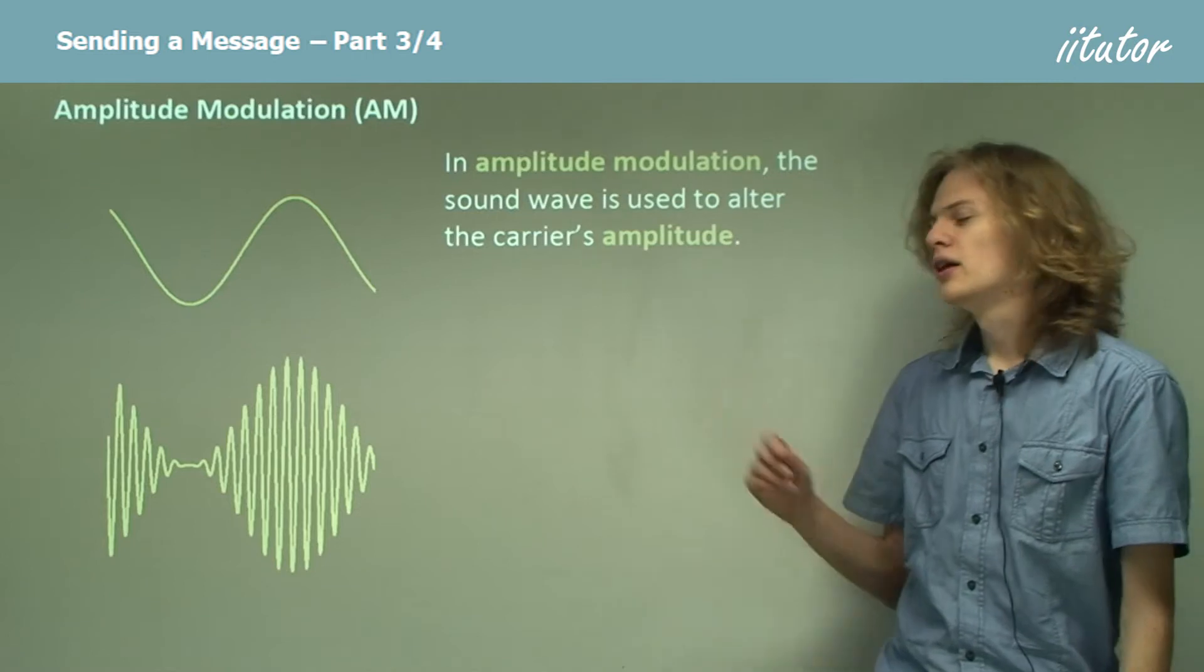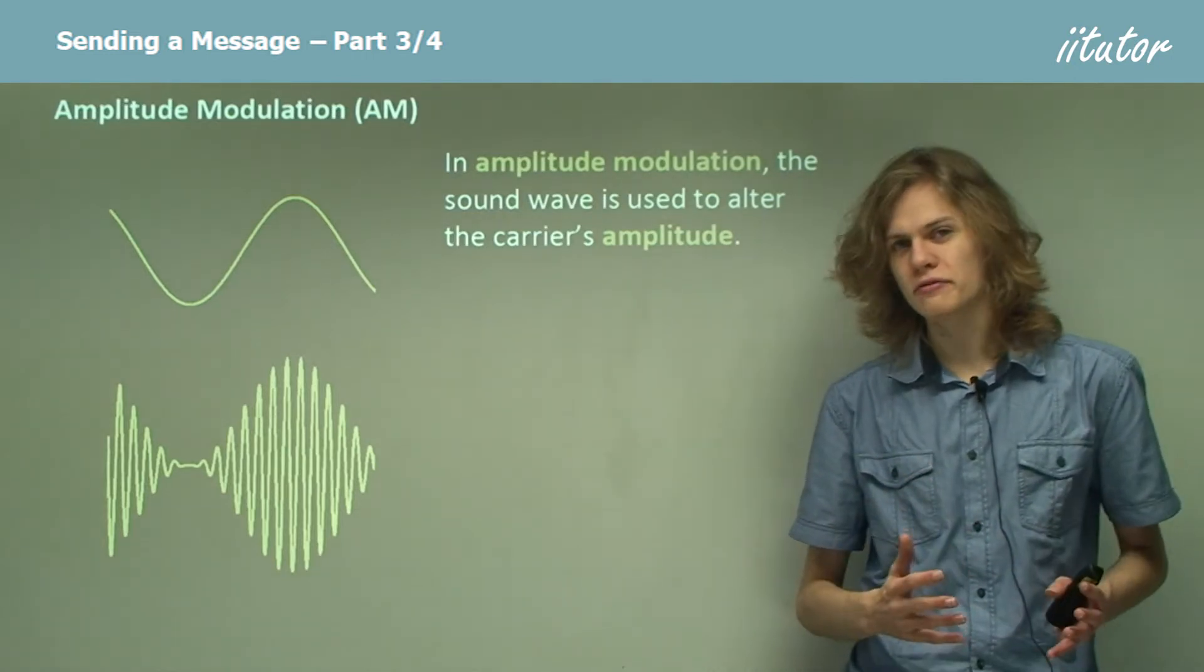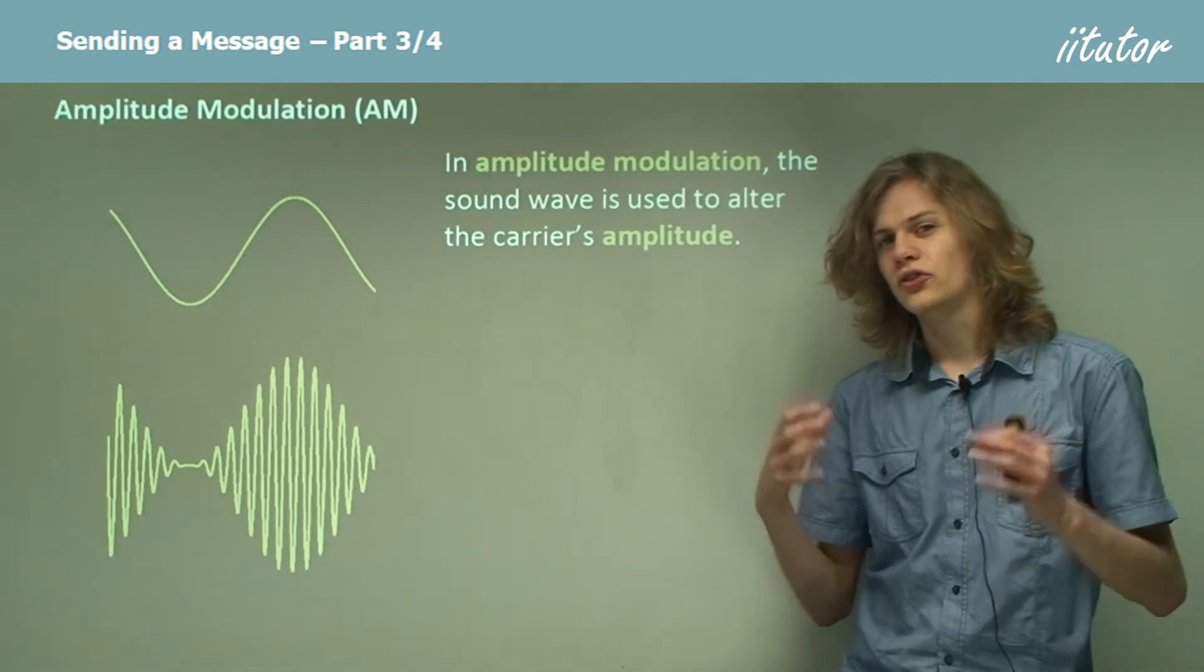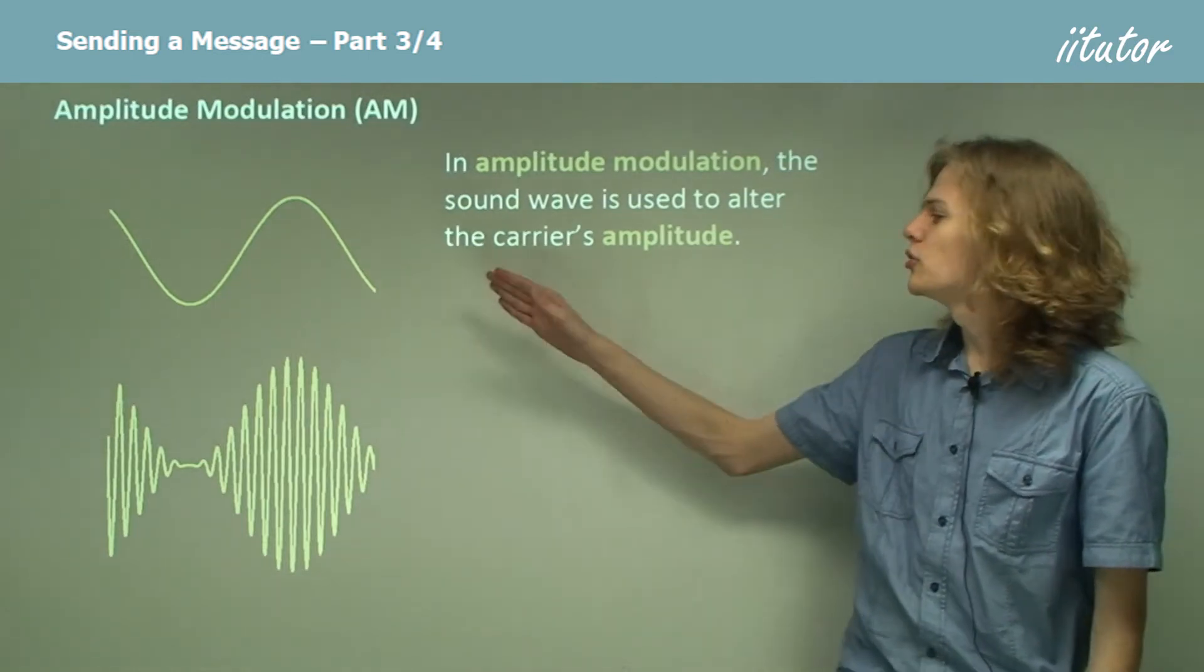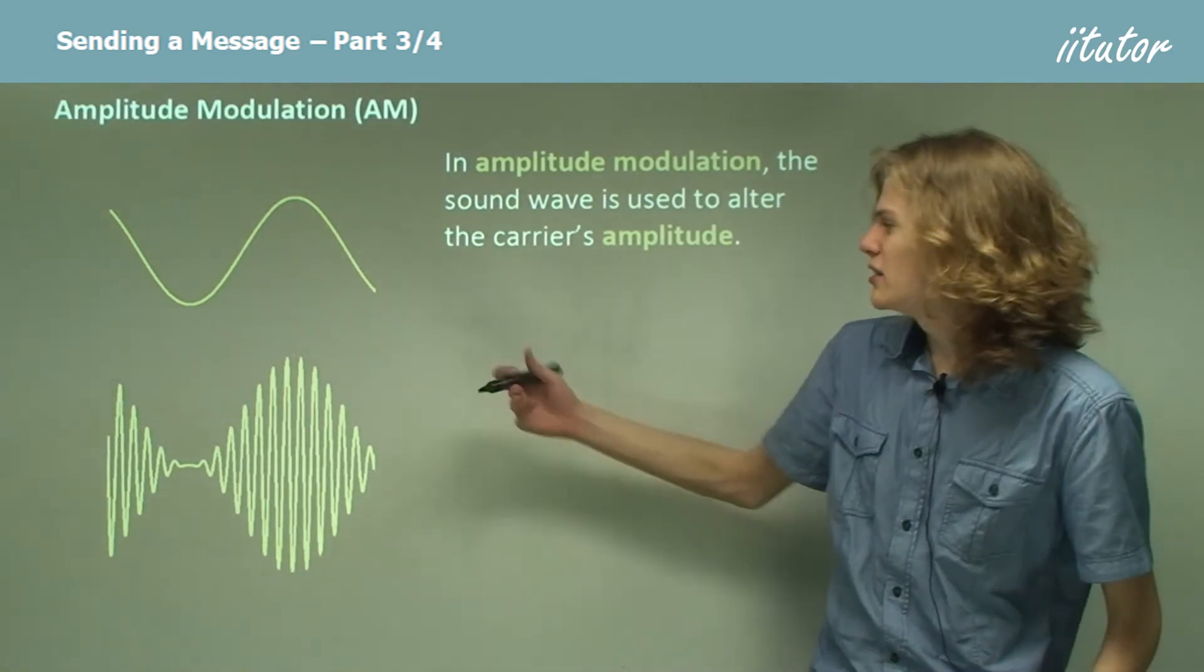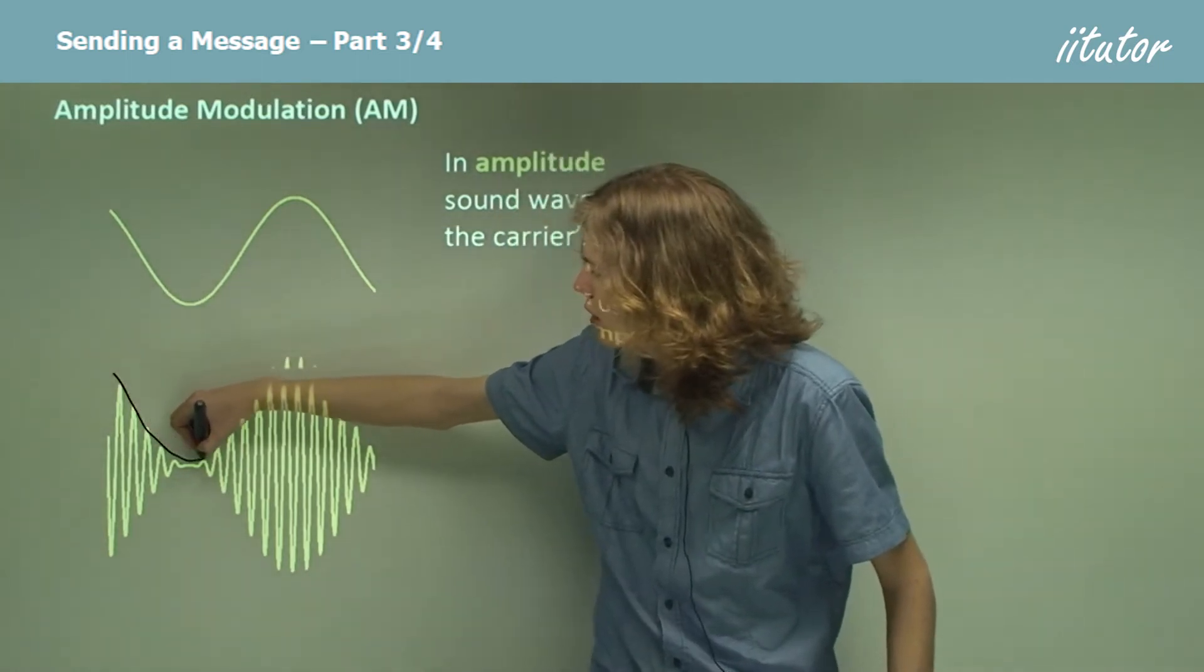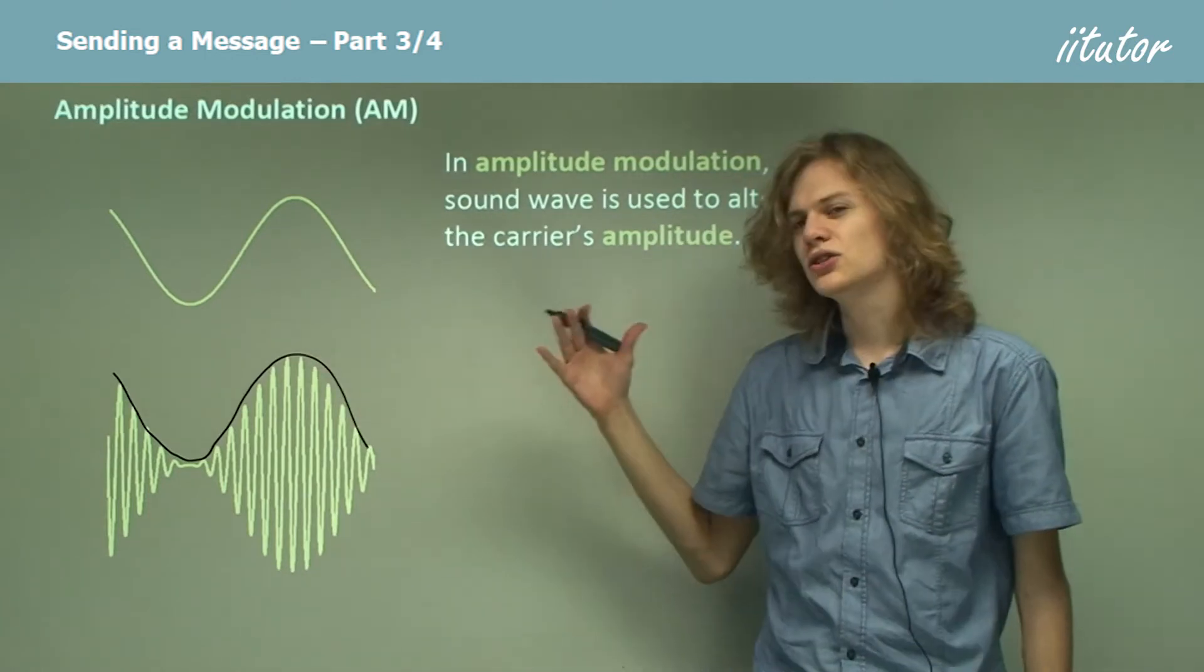So in amplitude modulation, the sound wave is applied to the amplitude of the radio wave. We can see the bottom half of this diagram is a carrier wave, that's the boring old normal wave that's been modified by this top wave. We can see that the amplitude of the carrier wave is varying like this in exactly the same way that this top wave is shaped.